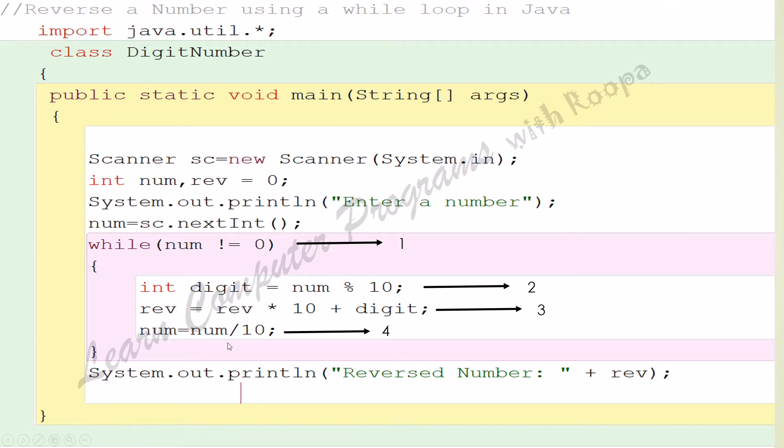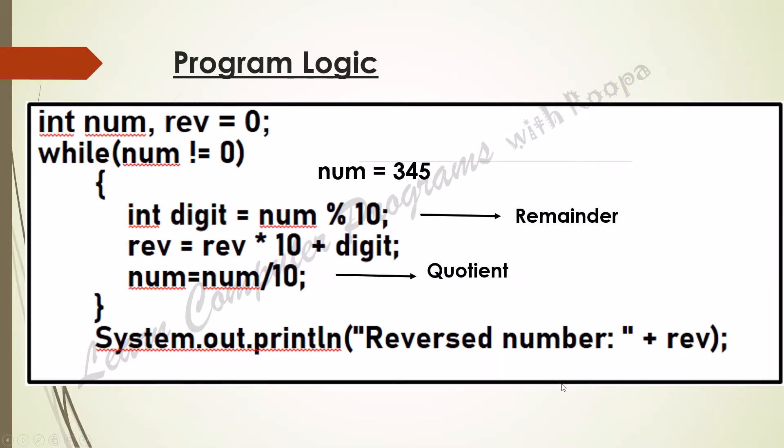So num equals num divided by 10, and system.out.println reverse number. Let us look at the program logic. Here again we have two variables which I told you earlier.